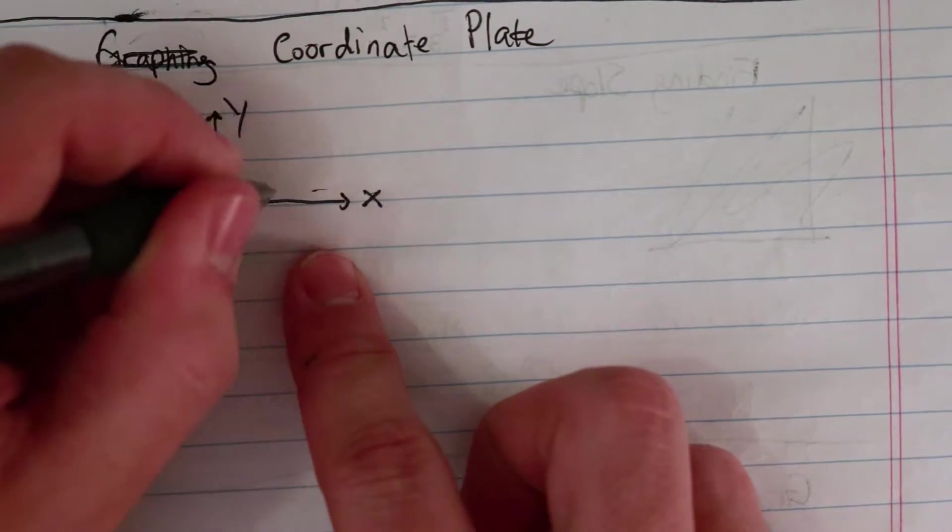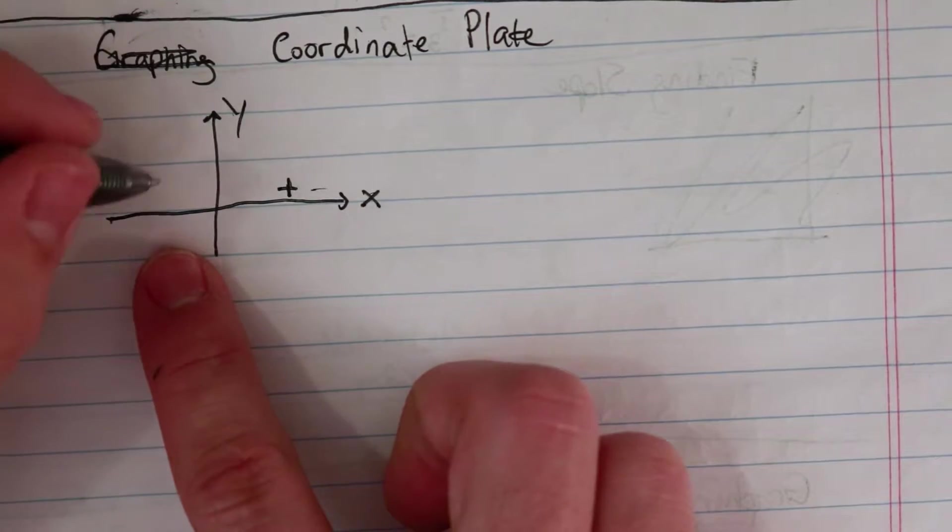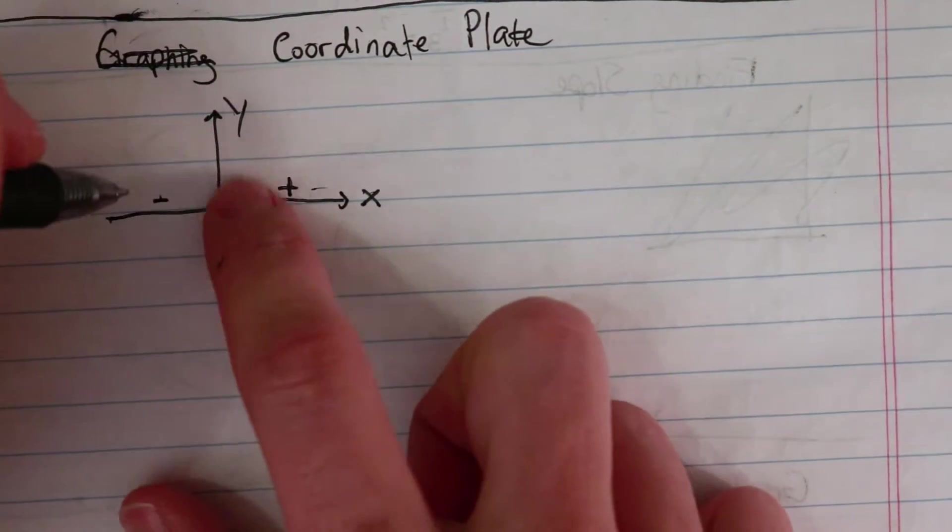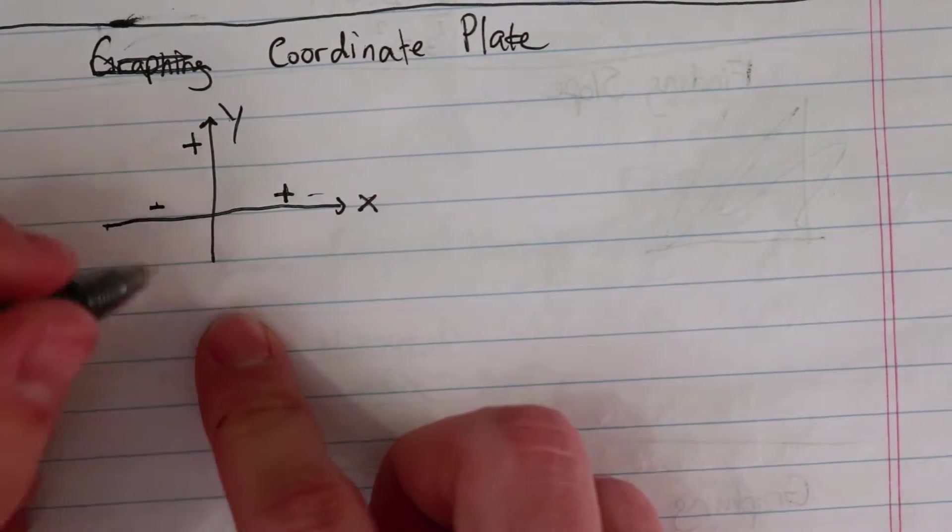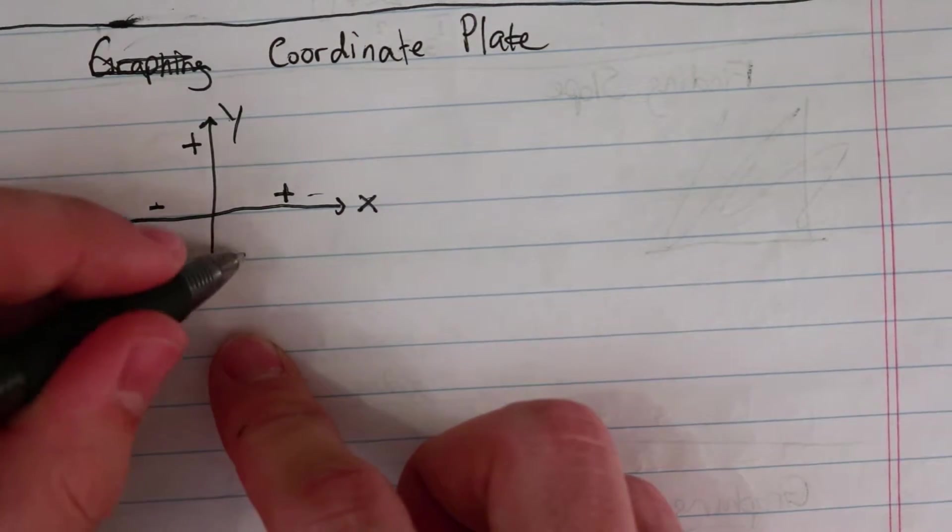Now, towards the right direction is positive, and towards the left direction on the x-axis, this is negative. And then towards y in the up direction or north direction, this is positive, and then down here, this is negative. I'm going to actually draw arrows on all sides, denoting that it goes on forever and ever.